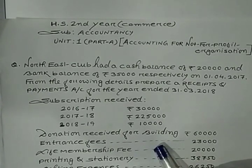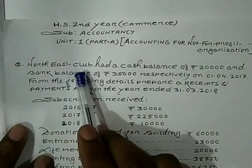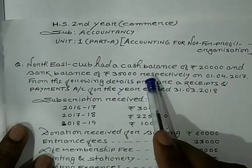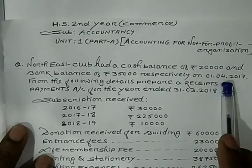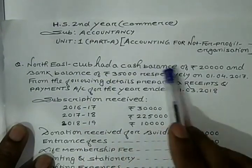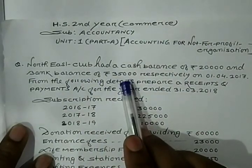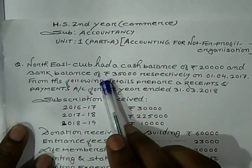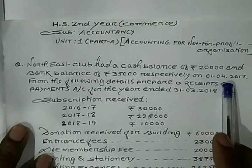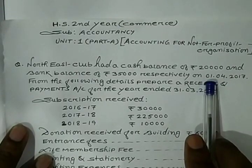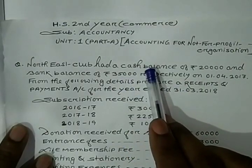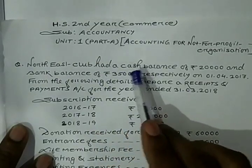Let's start. The first question: North East Club had a cash balance of Rupees 20,000 and bank balance of Rupees 35,000 respectively on 1st April 2017. That means there is one club named North East Club. This club had cash balance 20,000 Rupees and bank balance 35,000 Rupees. The date given is 1st April 2017, which is the opening date, so these are the opening cash balance and opening bank balance.